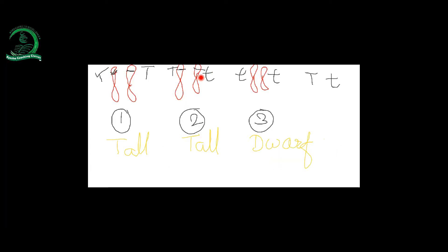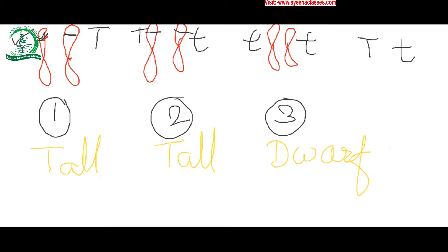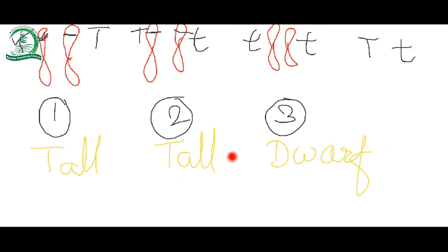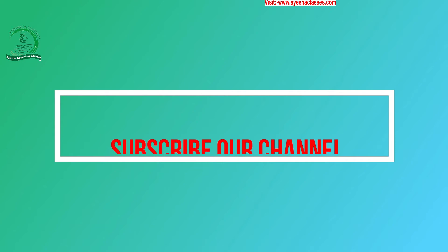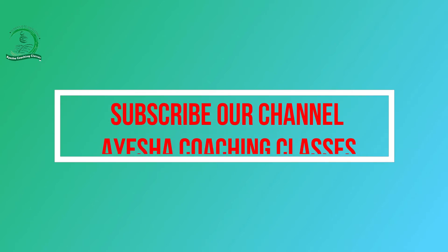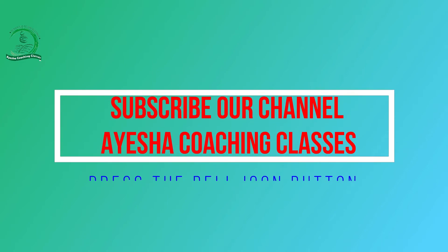This is how we see dominant and recessive. If there is one capital T and one small t, one might expect medium size — but that is not happening. There is a tall plant. It means capital T can express fully even though small t is present. So the allele which is dominant expresses itself. Now we were discussing what is meant by pure line — a generation in which similar alleles are present for a particular character.